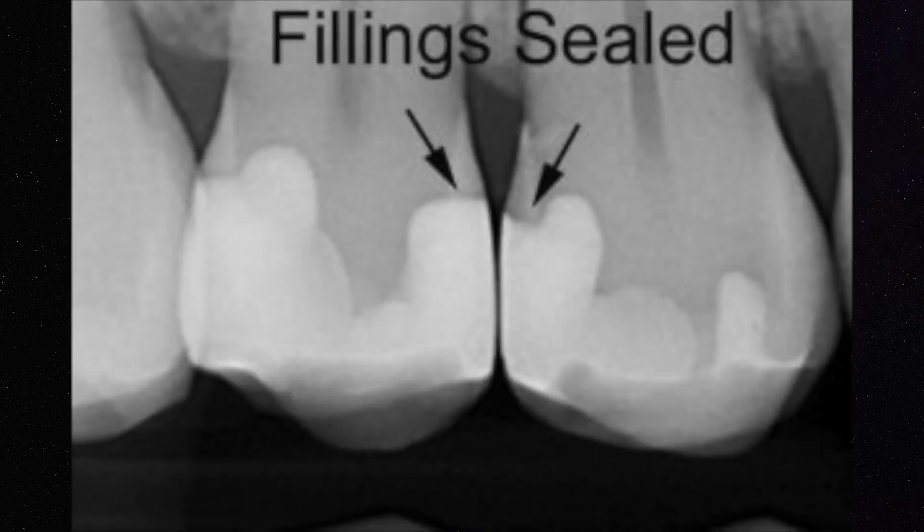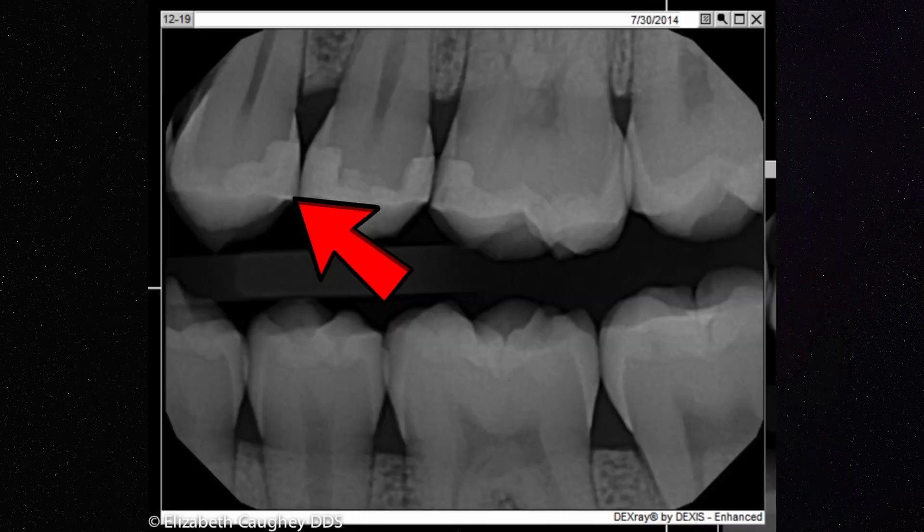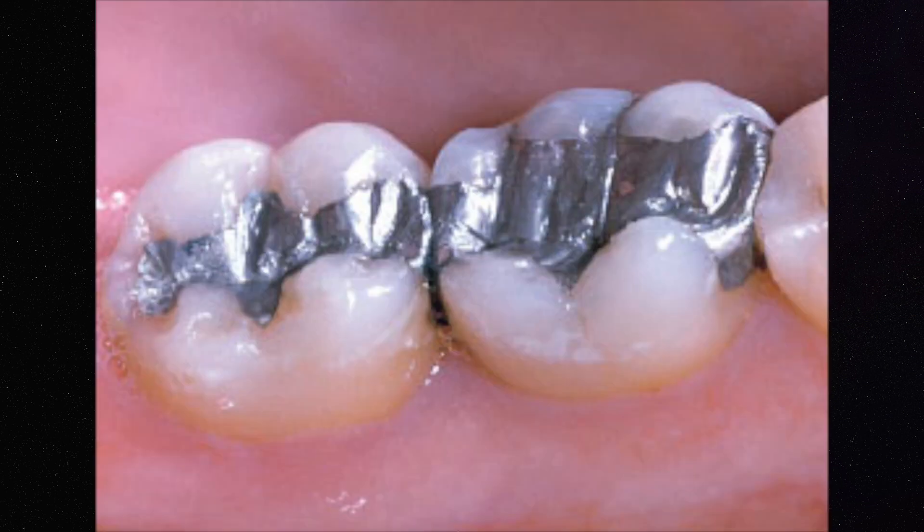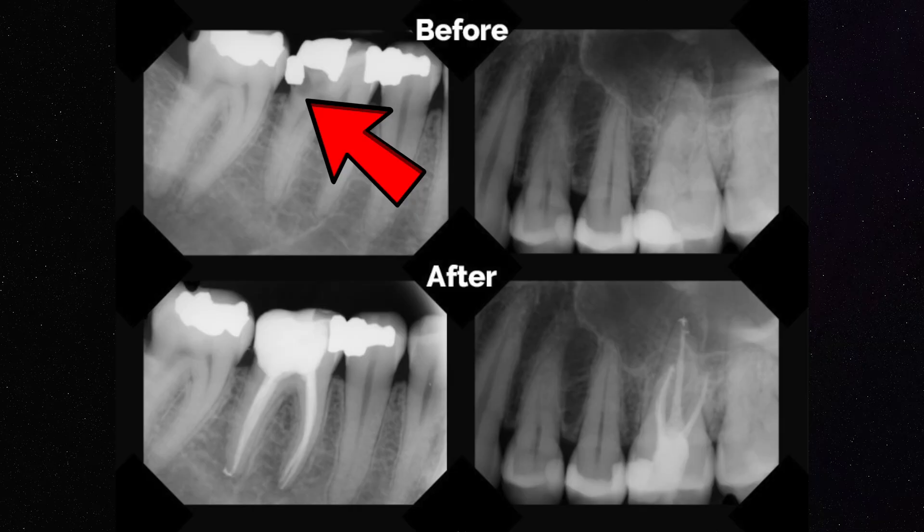The next major category is looking at different materials in your mouth and how they appear on radiographs. Starting with the most common — white or silver fillings. Here is an example of a white filling. As you can see, it looks slightly light on the x-ray, and you can identify it as a filling because it looks man-made — a sharp line or different color. This is important because we can look under the filling to see if there's any recurrent decay or a cavity that has developed underneath an older filling.